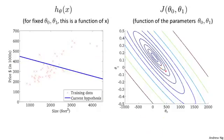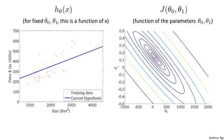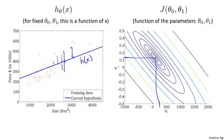Here's one more example: at this value of theta zero and that value of theta one, we end up with this hypothesis h of x. Again, not a great fit to the data, and we move even further from the minimum. The last example is actually pretty close to the minimum — not quite at it, but a decent fit to the data. The sum of squared distances between my training examples and my hypothesis is pretty close to the minimum, even though it's not quite there.